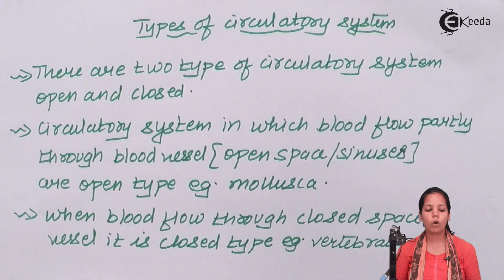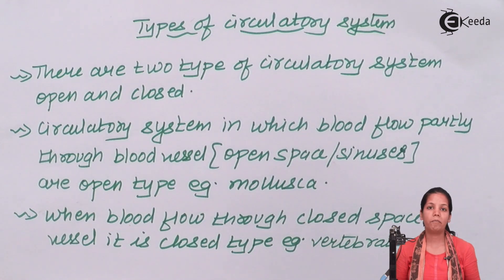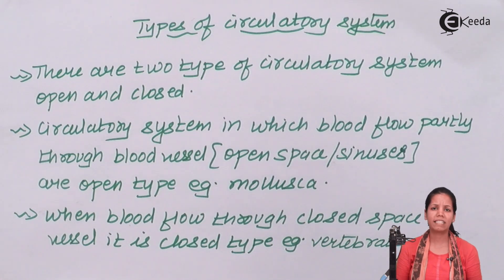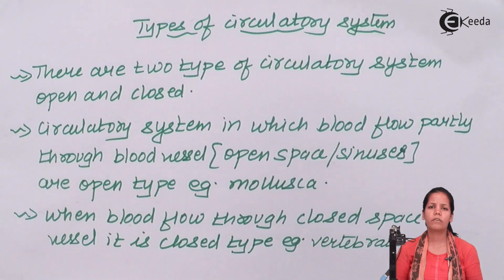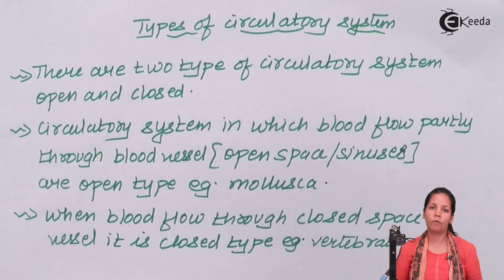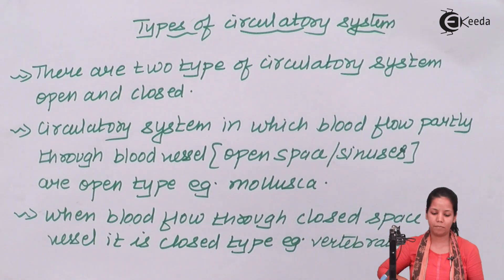We as human beings, having a closed circulatory system, have blood vessels — arteries, veins, and capillaries associated. Whereas in the open circulatory system, there are open spaces, and the blood flows through these open spaces.